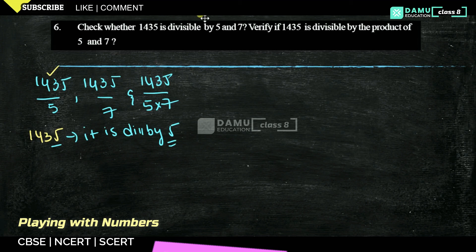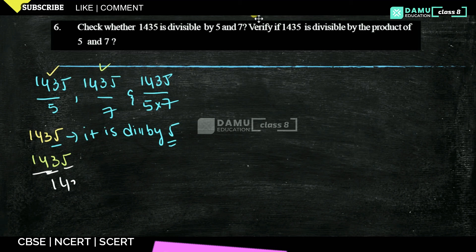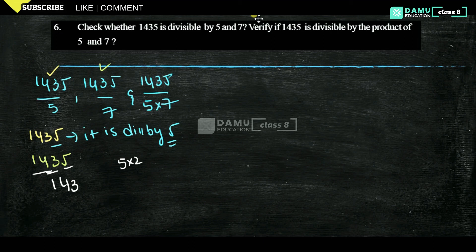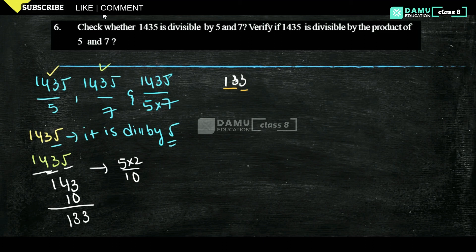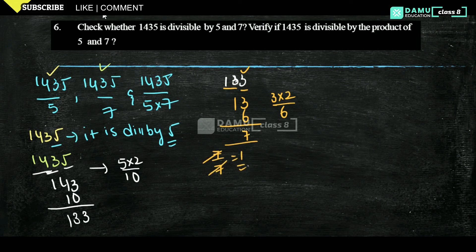Next, check 1435 for divisibility by 7. From the left side, take 3 numbers: 143, and the unit digit is 5. Multiply 5 by 2 to get 10, then subtract 10 from 143 to get 133. Take 133 again: left side is 13, unit digit is 3. Multiply 3 by 2 to get 6, then subtract 6 from 13 to get 7. Since 7 is divisible by 7, 1435 is divisible by 7. For a 4-digit number, a minimum of 2 steps is needed.